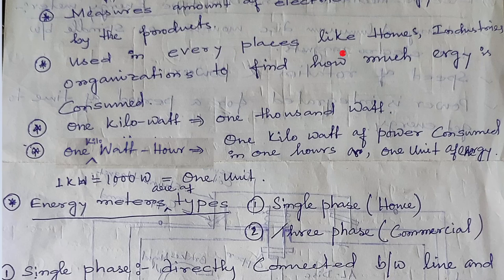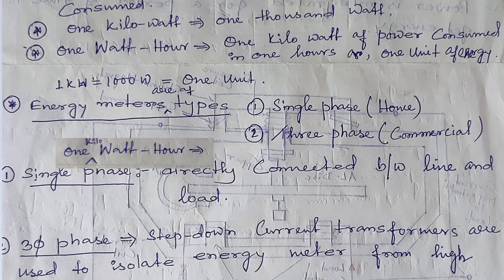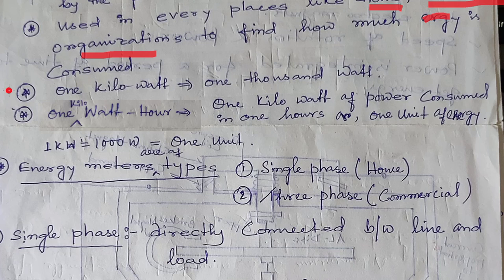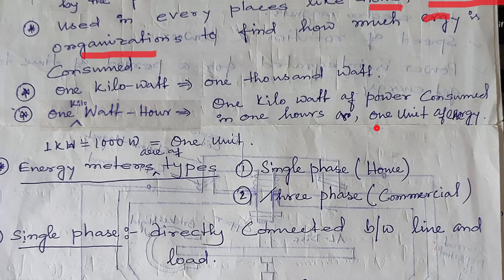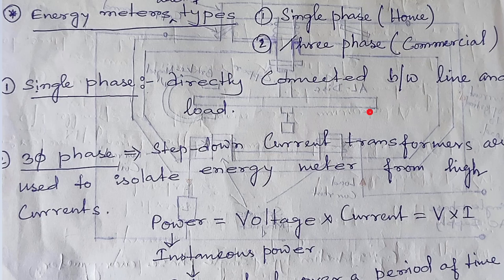Energy meter is used in every place like home, industries, organization to find how much energy is consumed. One kilowatt is nothing but one thousand watt. And one kilowatt-hour is nothing but one kilowatt of power consumed in one hour, and that is called one unit of energy.